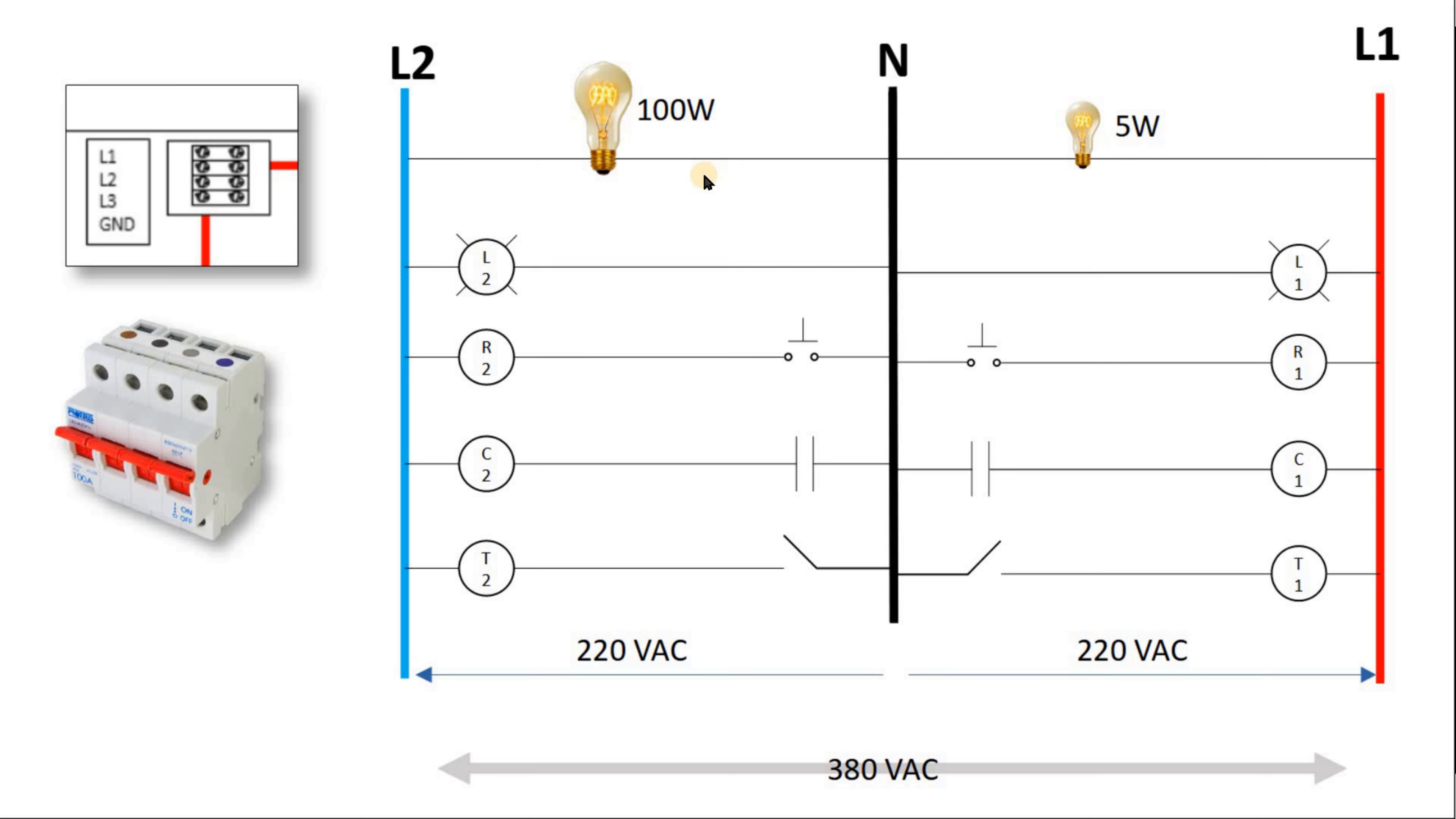You have a 5 watt and 100 watt, and you have resistance in this much higher than this one. Assume that's related to the watts. That means this resistance is 20 times this much. That means the 380 will be distributed between both of them if you remove the N, based on the resistance. You have 380 volts AC now distributed between the 5 watts and the 100 watts.